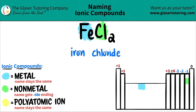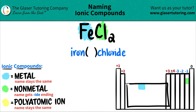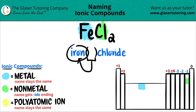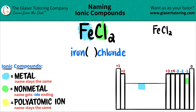Since it's ionic, let's just make sure — do we need a Roman numeral or not? Well, since iron is part of my transition metals and it can have multiple different oxidation states, we do need a Roman numeral. The Roman numeral is always the charge of the metal. To find it, we take the subscripts of each individual element and crisscross them up to find the charge.